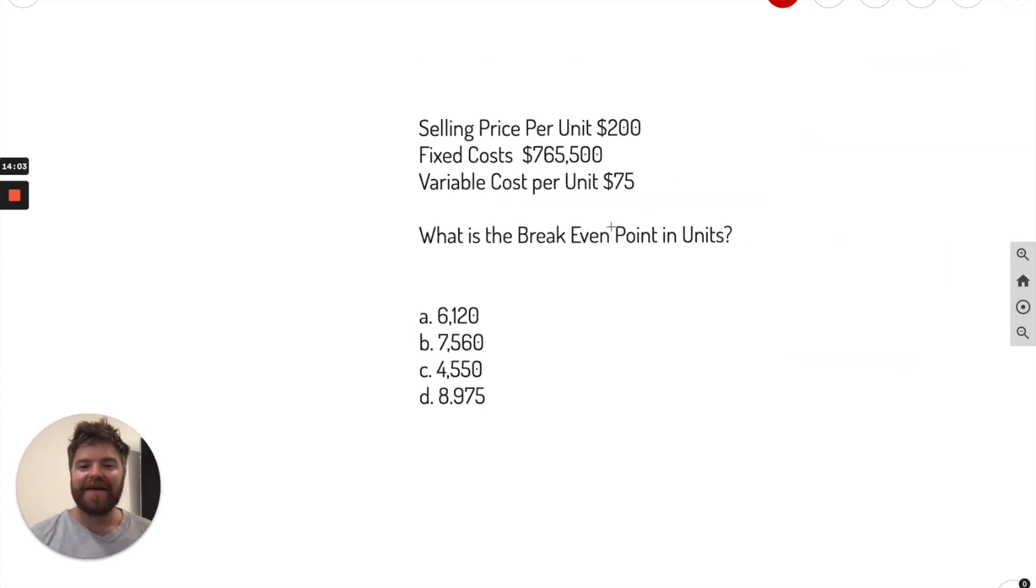Okay, last problem here. What is the break-even point in units? Units. So not sales volume. We did sales volume earlier. Now we're doing units. Different formula. All you do is take your fixed costs divided by contribution margin. That's it. Margin. And that's in units. So we call it contribution margin per unit. So go ahead and plug it in here.